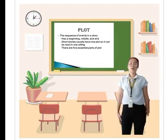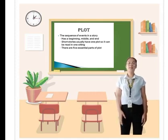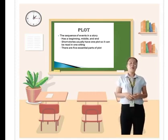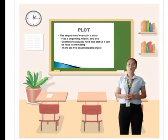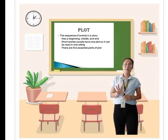The sequence of evidence in a short story has beginning, middle, and end. Short story usually have one plot so it can be read in one sitting. There are five initial parts of plot.